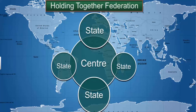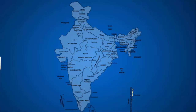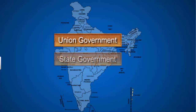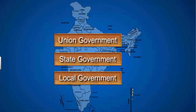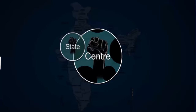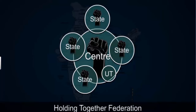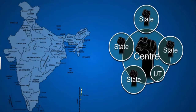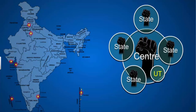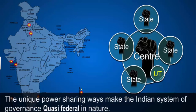For example, Jammu and Kashmir in India has been granted special status. India is a union of states based on the principles of federalism, with a three-tier system: the union government, state governments, and local government consisting of gram panchayats and municipalities. The Indian union follows the holding together federation model, but power sharing can vary across units — Jammu and Kashmir enjoys more powers, while union territories are virtually dependent on the center. These unique arrangements make the Indian system quasi-federal in nature.